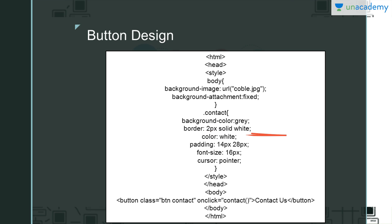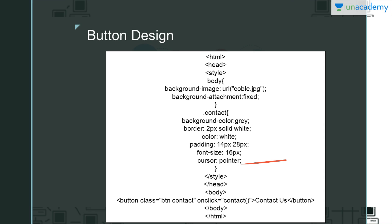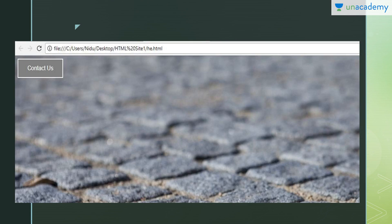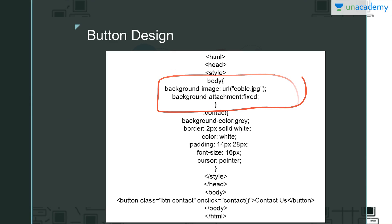The color value here is white — this sets the text color. Padding is set to 14px and 20px to 28px, controlling the space inside the button. Font-size is 16px — you can increase or decrease this. Cursor is set to 'pointer', which means when you hover over the button you will see a hand cursor instead of an arrow. This is the output: you can see the button with a 2px white border, 'Contact Us' text in white, a grayish background, and a background image added as taught in the previous video.